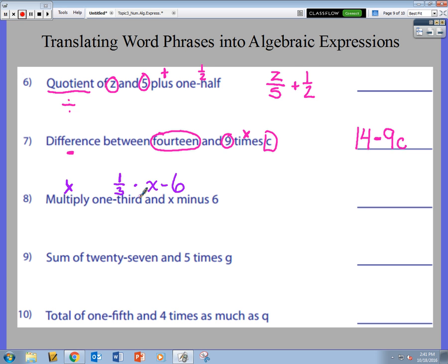It says multiply one-third and x minus 6, meaning I should find the difference of x minus 6 first. And then when I get that difference, multiply that difference by one-third. That's why I'm incorporating the parentheses here.